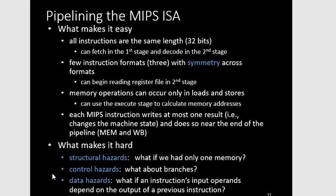What makes pipelining easy for MIPS is that all instructions are the same length — 32 bits — so you can fetch in the first stage and decode in the second. There are only three instruction formats: R-type, I-type, and J-type, so you can begin reading from the register file in the decode stage. Fetch fetches, decode reads, execute does the ALU operation, memory handles load and store, and write back writes from memory into the register.